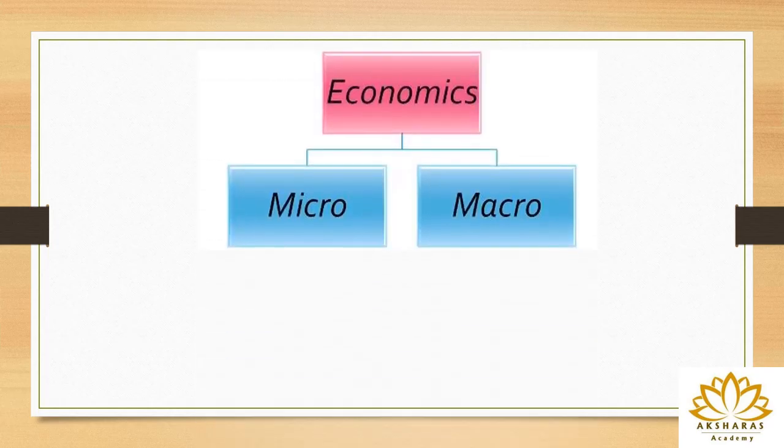Economics is classified into two: microeconomics and macroeconomics. In your 11th standard you would have studied about microeconomics. For example, you study about a particular fruit — that is a micro study, a small study about a particular fruit. Micro means about an individual, about a consumer — studying that is called microeconomics.